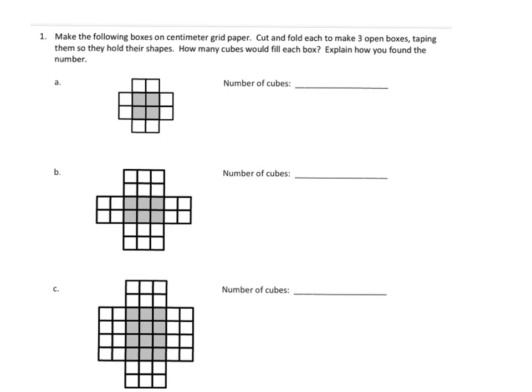Problem number one is one that I can't really do for you since I've got just a video here and I'm not recording any live action. Make the following boxes on centimeter grid paper. Cut and fold each to make three open boxes, taping them so that they hold their shapes. How many cubes would fill each box? Explain how you found the number.